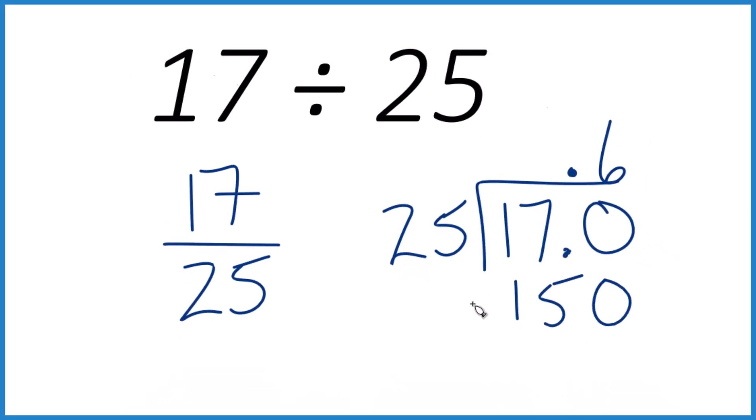So that works, I think, because if we subtract, we'll get 20. 25 doesn't go into 20, but we could put another 0 here and bring it down as long as we move over a place.